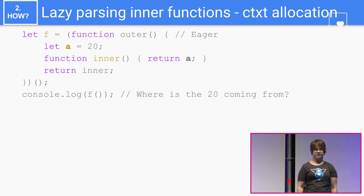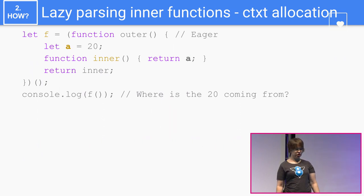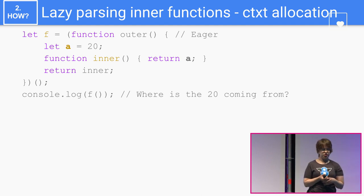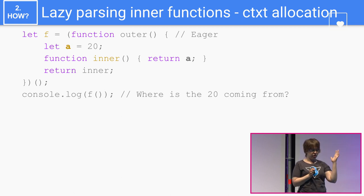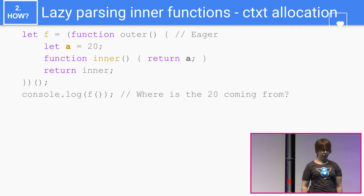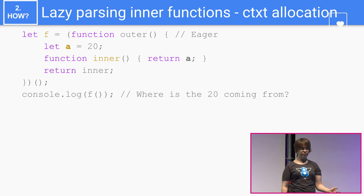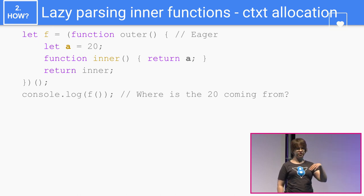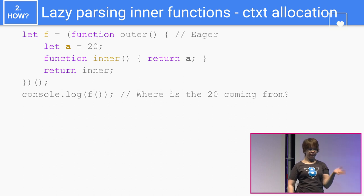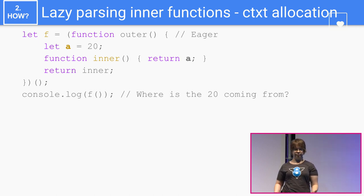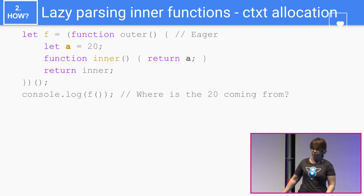Lazy parsing inner functions is more complicated than lazy parsing top-level code, and to understand why, we need to look at context allocation. Here there is a function outer, which is an IIFE — there is a paren before the function and a call right after, so we eager parse that. That function has a local variable called A, and then it has an inner function that returns this local variable. The function outer returns a reference to the inner function. So when we call outer and assign the return value to f, f will be a reference to inner, and calling f prints out 20.